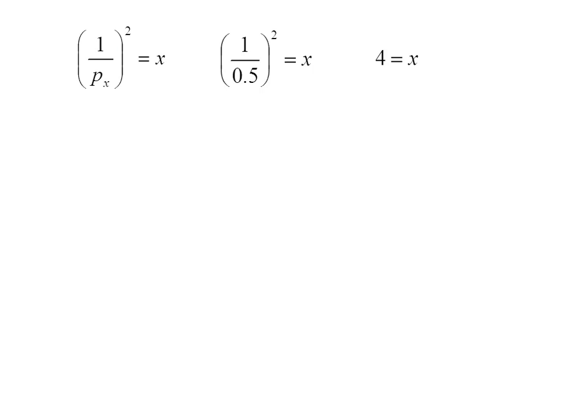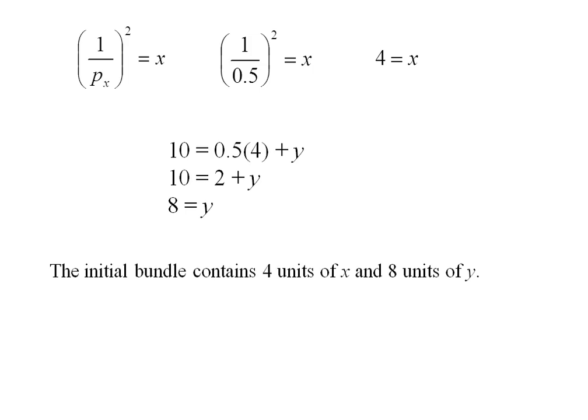I can plug that 4 into my budget constraint. So the 10 dollars equals 50 cents times 4 plus a dollar times y. I can solve for y and I get 8 units. So the initial bundle has 4 of x and 8 of y.